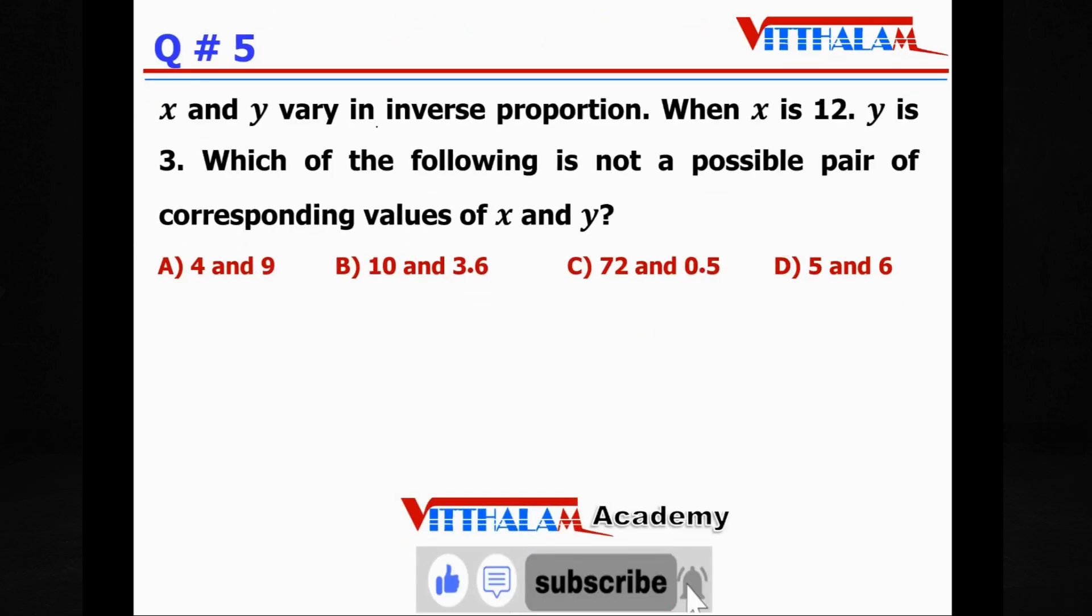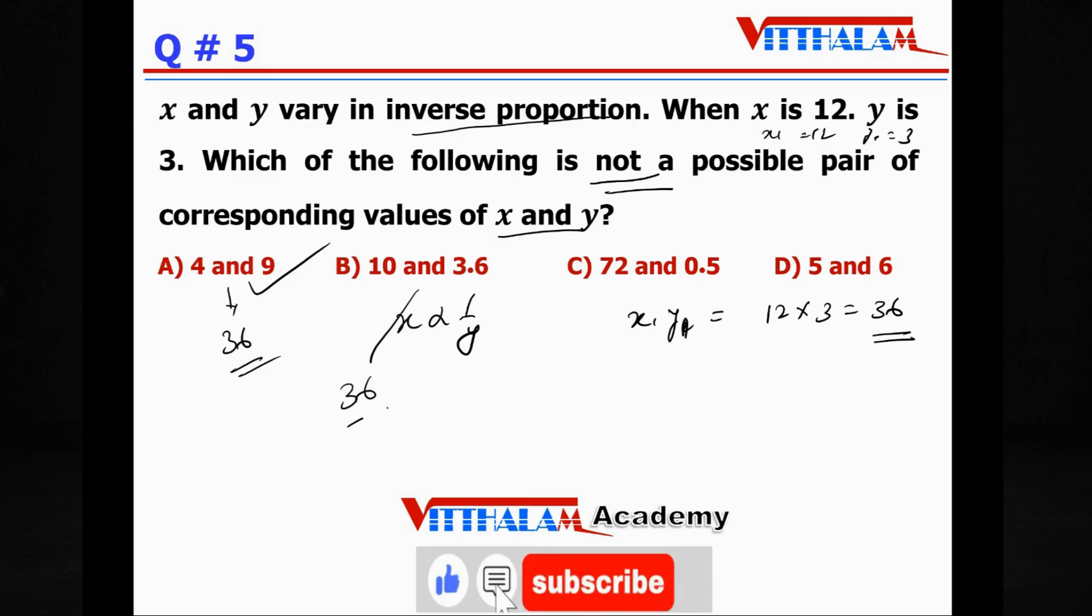Question 5: x and y vary in inverse proportion, so x ∝ 1/y. When x is 12, y is 3. Let's say x₁ = 12, y₁ = 3, so x₁y₁ is supposed to remain constant: 12 × 3 = 36. Which of the following is not a possible pair of corresponding values of x and y? We have to take the product. 36, that is 36, in proportion. 10 × 3.6, that is also 36, in proportion. 72 × 0.5, that is 36, also in proportion. 5 and 6, that is 30, so this is not in proportion. Therefore answer is D.